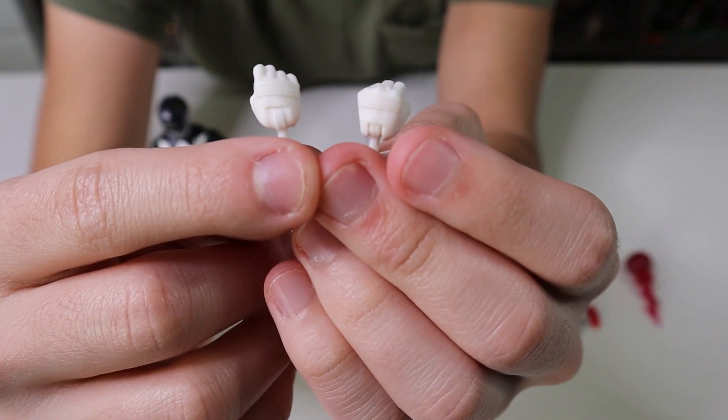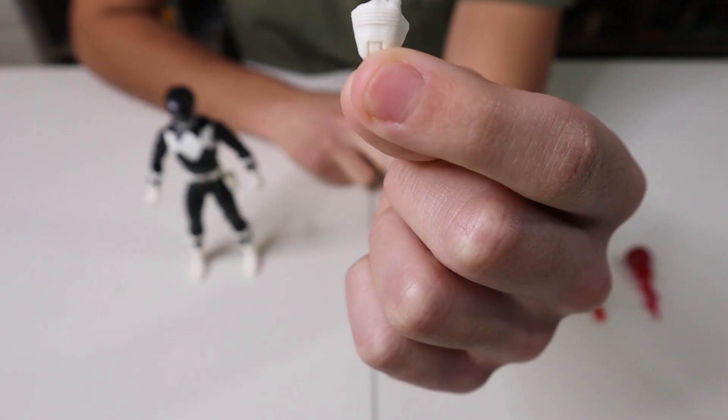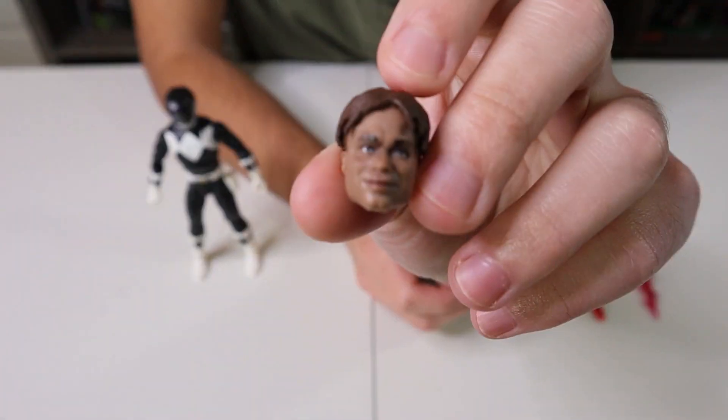Now we're going to start with the hands. This Ranger comes with two spare hands. One is a holding hand so that he can hold his weapons, and then the other extra hand is just a fist. Let's move on to his head next.